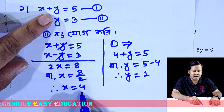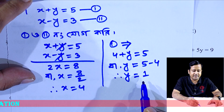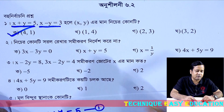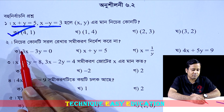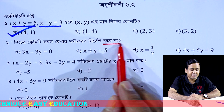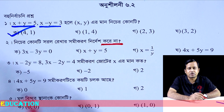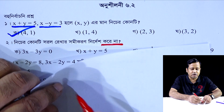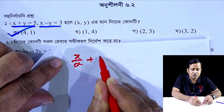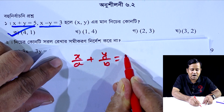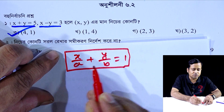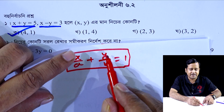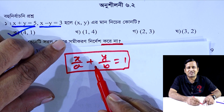So x is 4, so y equals 1. So x is 1, so y equals 5. So x is 1, so y equals 5.